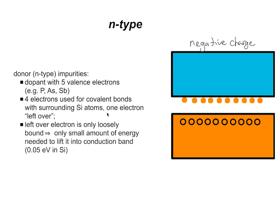Four electrons are used for the covalent bonds and one is left over. In silicon doped with n-type impurities, this energy can be as little as 0.05 electron volts, compared to 1.1 electron volts for intrinsic semiconductors — so we draw those donor electrons just below the conduction band. For example, if we dope silicon with one antimony atom for every 100 million silicon atoms, that yields approximately 5×10¹⁶ conduction electrons per cubic centimetre at room temperature — a factor increase of 5 million in conductivity.